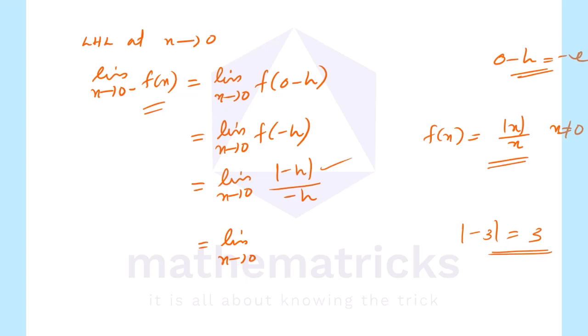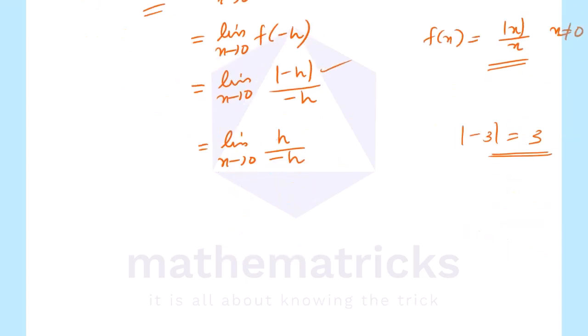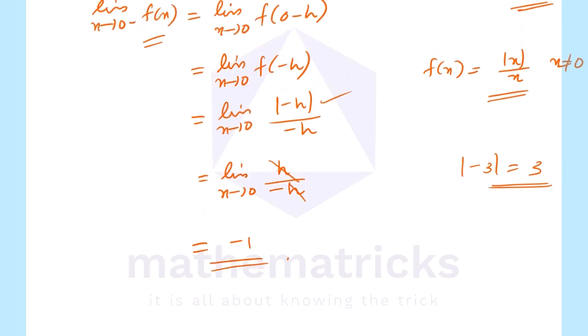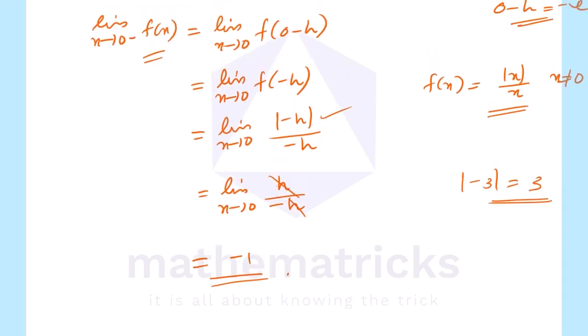Since mod of minus h is positive, we have h divided by minus h. The h's cancel, giving us negative 1. Therefore, the left-hand limit as x tends to 0 minus of f of x equals negative 1.